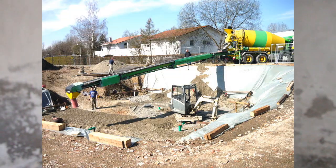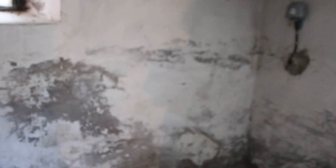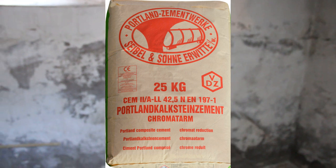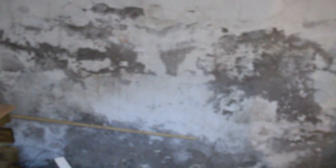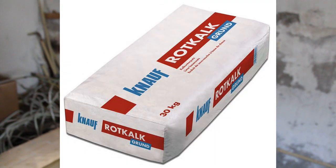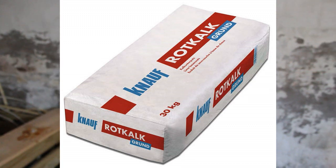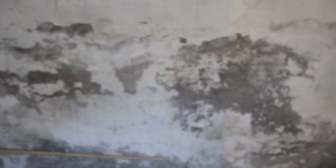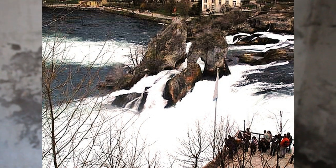Die Fuge selbst ist letztendlich ein Mörtel, den wir anrühren. Wenn wir Mörtel anrühren wollen, dann brauchen wir einmal ein bisschen Sand dazu, natürlich klar. Wir werden dann irgendwo Zement dazu brauchen, was wir auch dazu brauchen gegebenenfalls, um dort etwas Nachhaltiges zu leisten. Das ist danach ein Kalk, das ist ein Rot- oder ein Weißkalk.